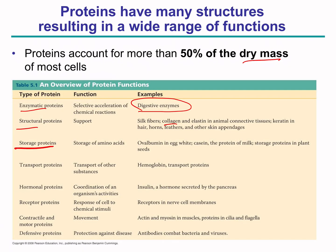Proteins can function in storage, particularly in the egg white and in cases of milk. They can be transport proteins, such as hemoglobin, which is involved in transport of oxygen. They can be hormones that basically signal — for example, insulin, which regulates the blood glucose level released and secreted by the pancreas. They can be receptors on the surface of the cell that are responsible for signaling. They can also be the contractile and motor proteins, both inside the cell and outside the cell, giving rise to functions such as actin and myosin contracting inside the muscle to give rise to locomotion. Last but not least, we have the defensive proteins, where the antibodies combat bacteria and viruses.